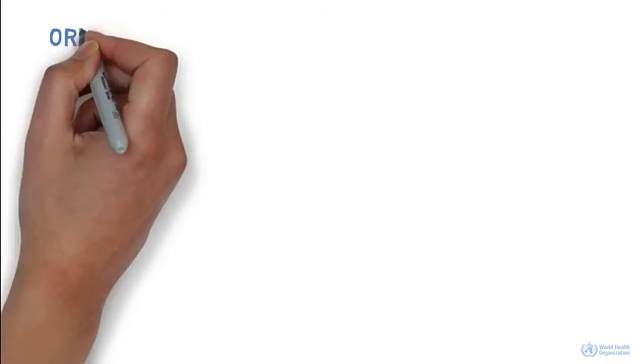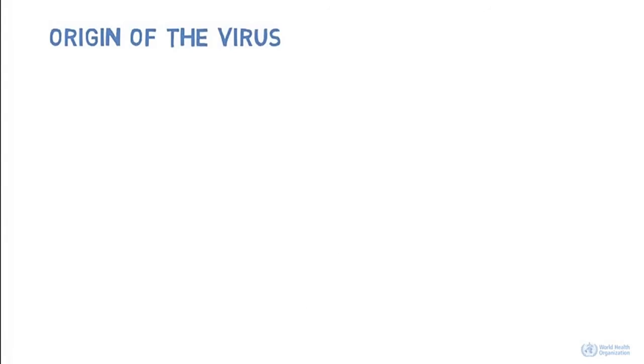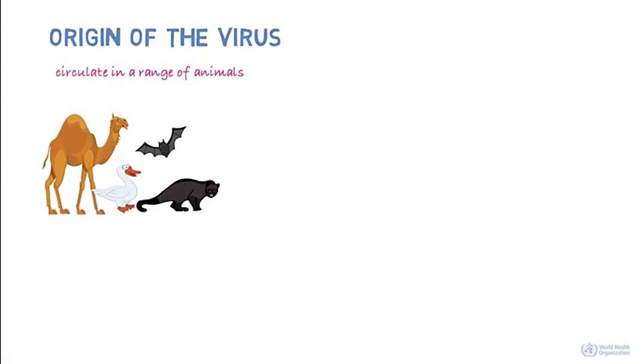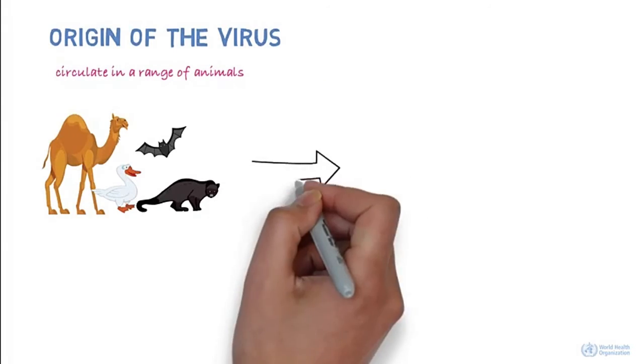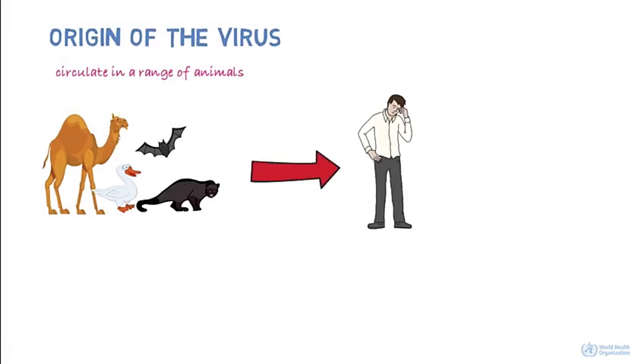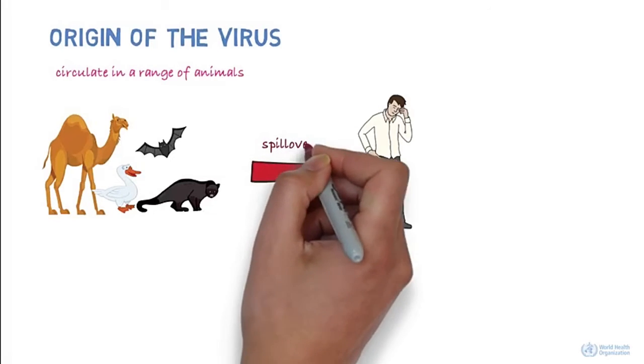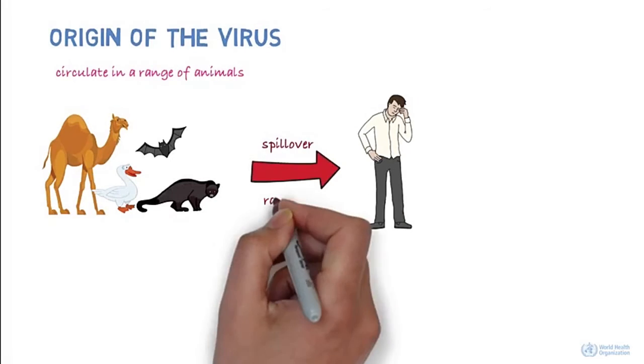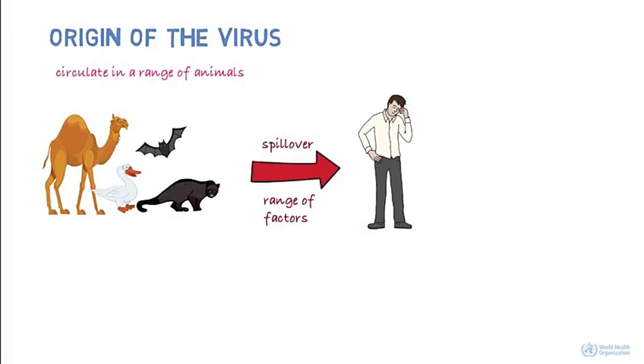Where did the virus come from? It's known that coronaviruses circulate in a range of animals. Sometimes these viruses can make the jump from animals to humans. This is called a spillover, and could be due to a range of factors such as mutations in the virus or increased contact between humans and animals.